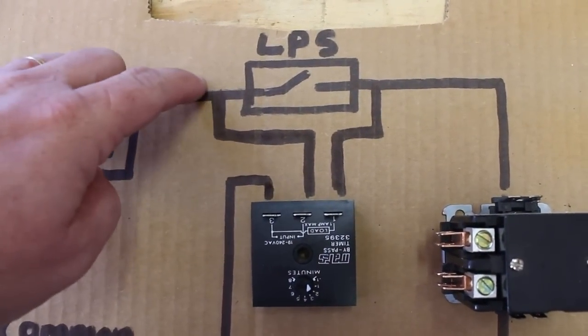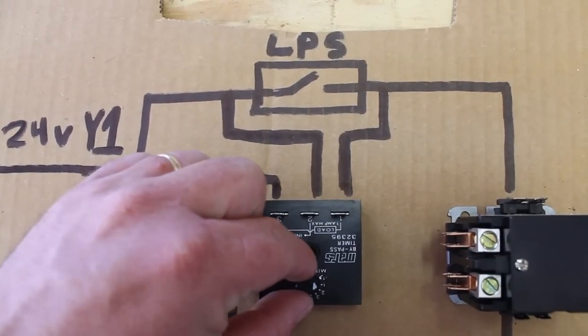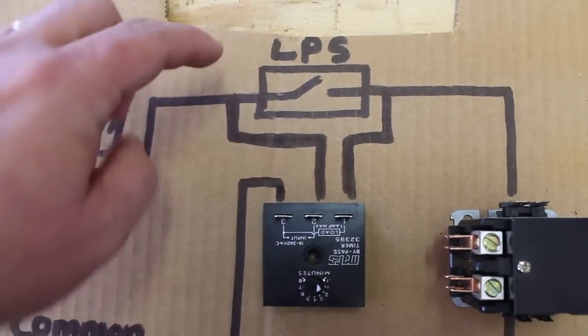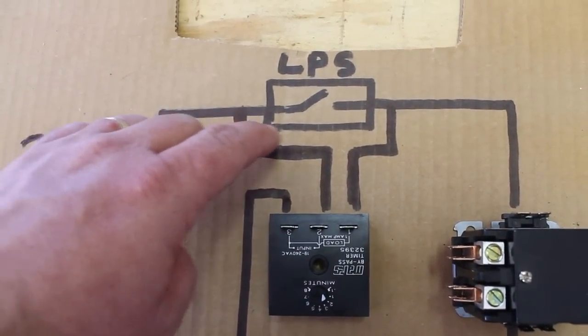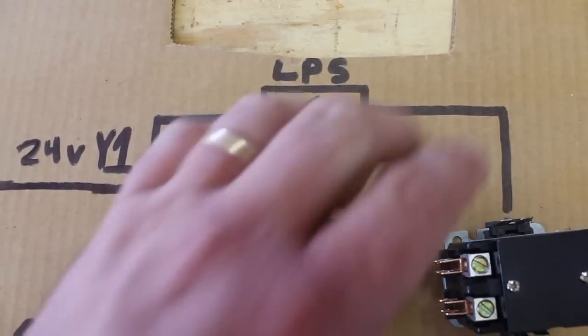When power is brought in on Y1, it starts the timer which is set between six seconds and eight minutes. For that time period, it will allow power to pass through, bypassing that switch.